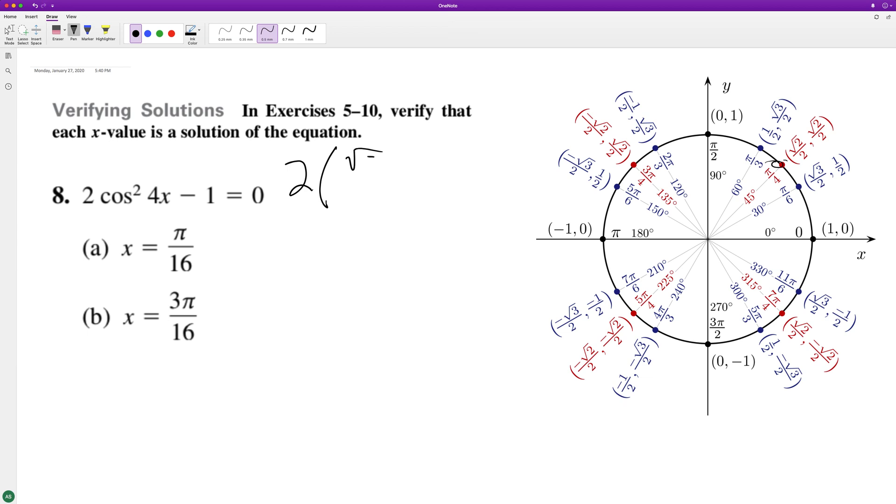So we end up with 2 times 2/4, which just reduces down to 1 minus 1 equals 0. So that satisfies the equation.